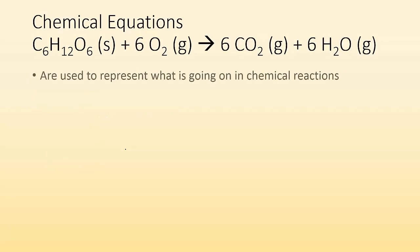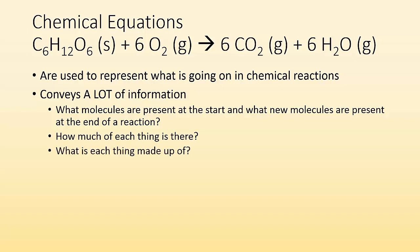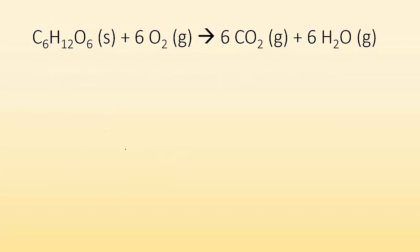Chemical equations are used to represent what is going on in a chemical reaction, and they convey a lot of information. What molecules are present at the start, and what new molecules are present at the end of the reaction? How much of each thing is there? What is each thing made up of? What phase was everything in?